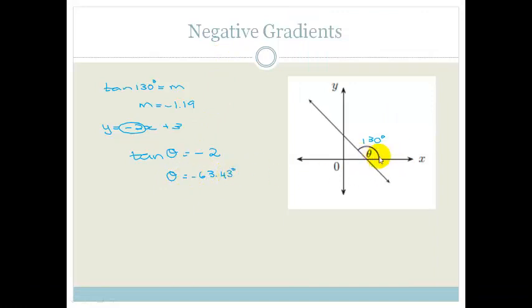We get theta is equal to minus 63.43 degrees, which doesn't seem to make sense. But what it's done is the calculator has given you the acute angle. It has given you this angle here, the size of the acute angle, and then what you would have to do is subtract that from 180 to get the actual size of theta.